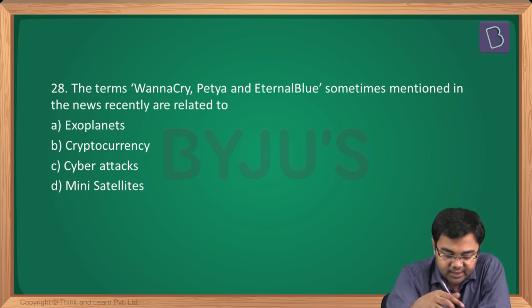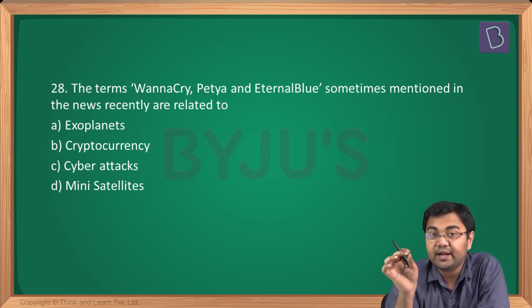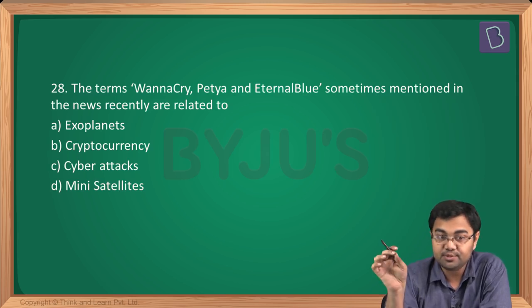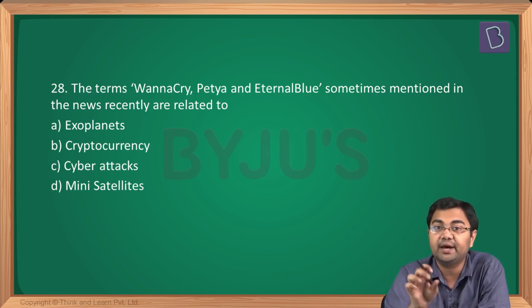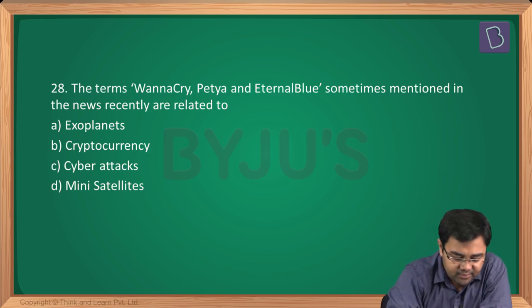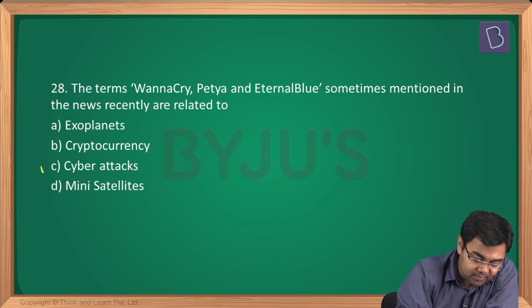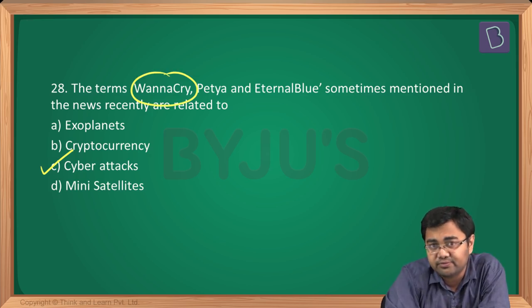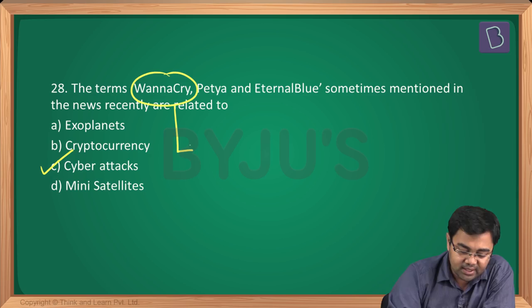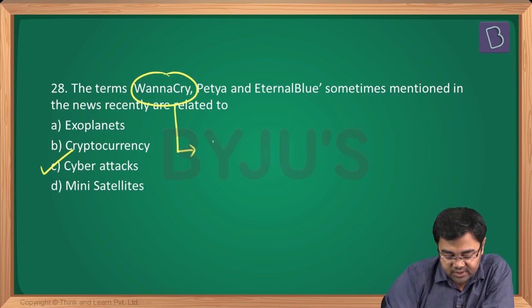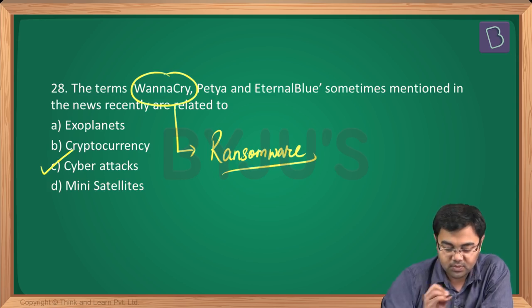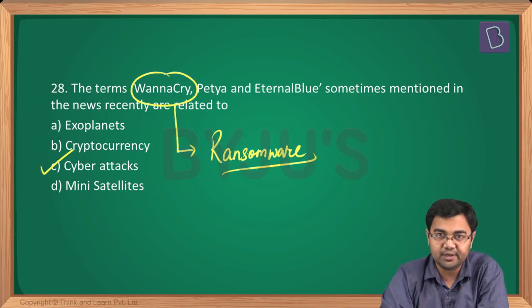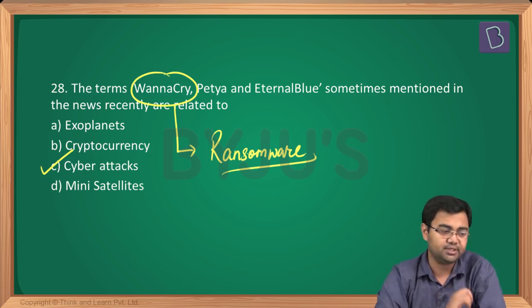Question number 28: the terms WannaCry, Petya and EternalBlue are related to cyber attacks. WannaCry is a kind of malware — specifically ransomware — and became very famous when it originated. This is one of the easiest questions in the paper.